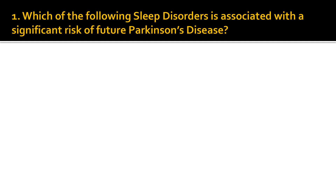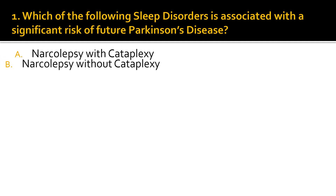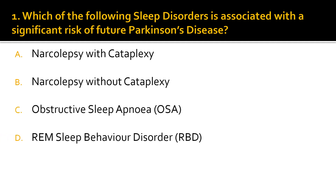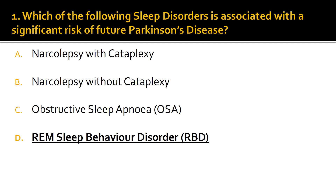Question 1. Which of the following sleep disorders is associated with a significant risk of future Parkinson's disease? There are four options. Please go through the options and make your choice. You can pause and make your selection. The correct answer is D: REM sleep behavior disorder, or RBD.